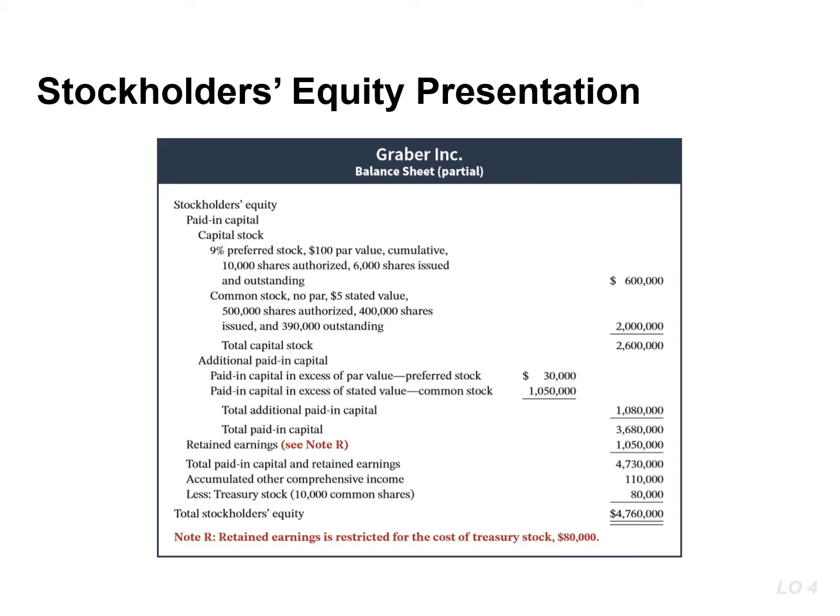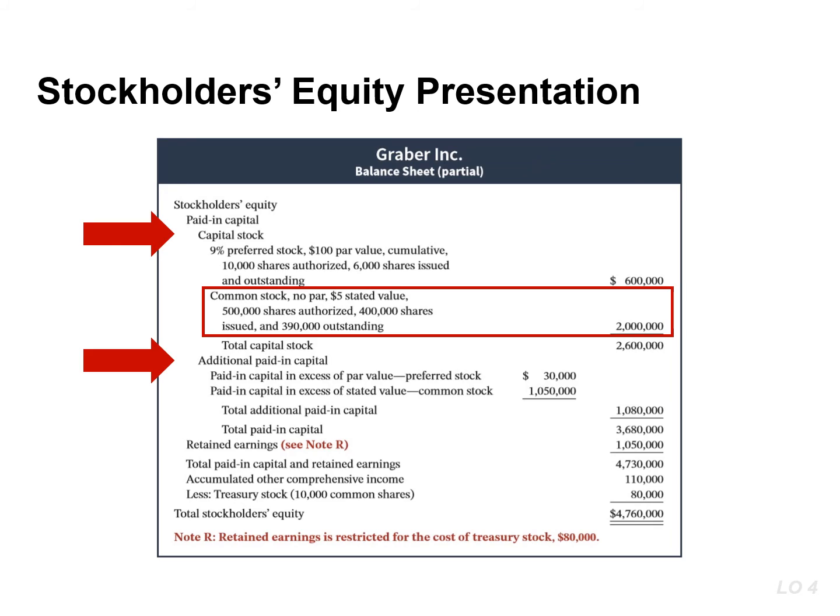This slide presents the stockholders' equity section of the balance sheet. Companies list preferred stock before common stock for both capital stock and additional paid-in capital. They also report information about shares authorized, issued, and outstanding for each class of stock. In this example, common stock indicates that 500,000 shares have been authorized, but only 400,000 shares have been issued. There are 390,000 shares outstanding. The difference between the shares issued and outstanding represents the 10,000 shares in treasury.